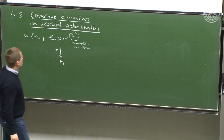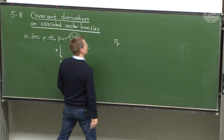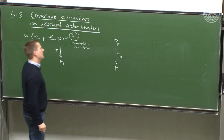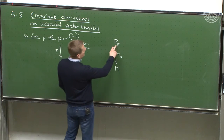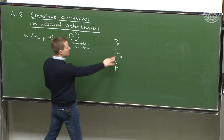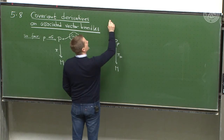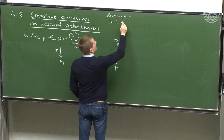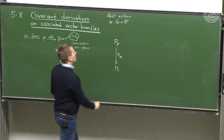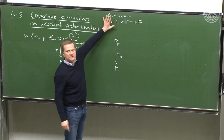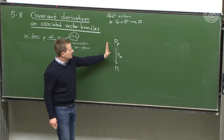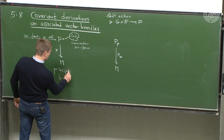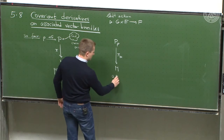We then considered an associated vector bundle: for some typical fiber F, the total space P_F is defined with an appropriate projection map down to M. The construction of P_F — and the association of such an associated vector bundle — requires a left action: a left action that takes a group element and acts on the fibers F from the left. You need to provide this datum of a left action to construct the associated bundle, but once you have provided it, you have the principal bundle and the associated bundle.